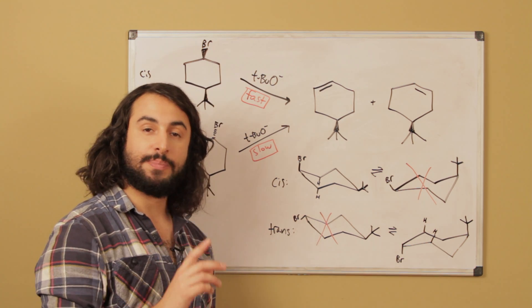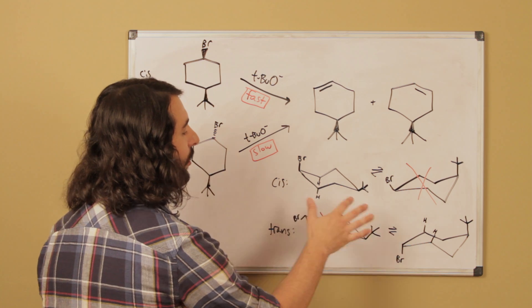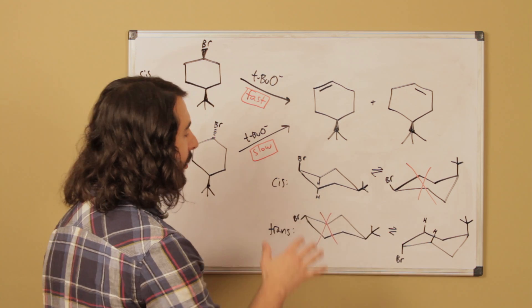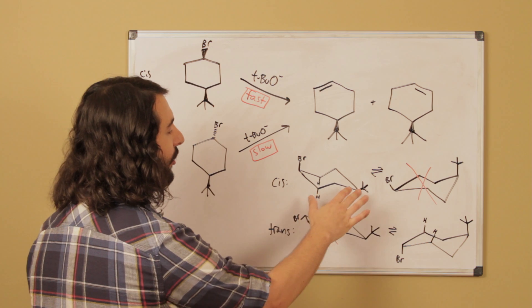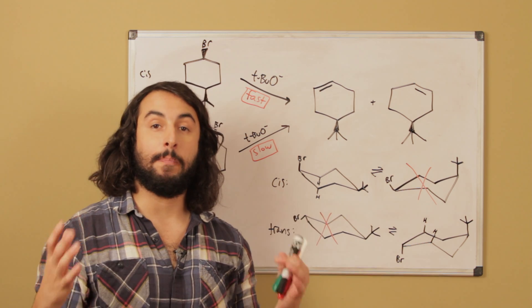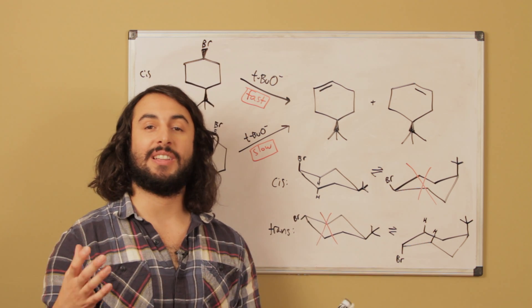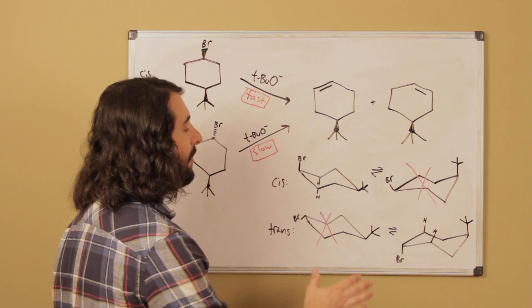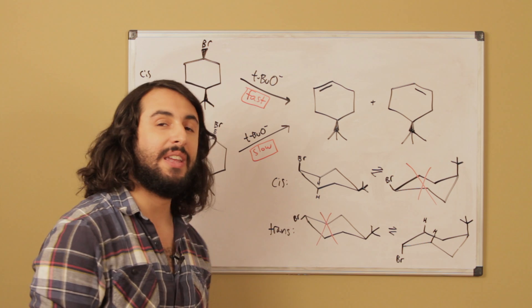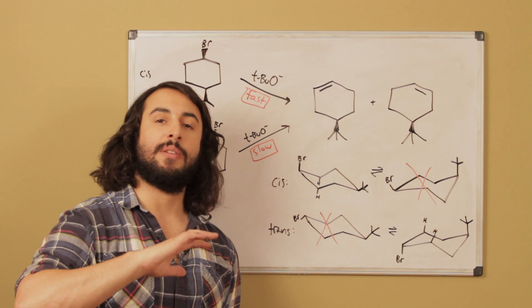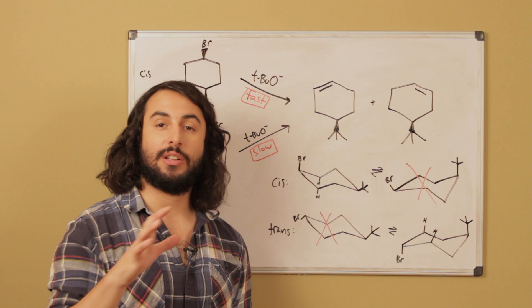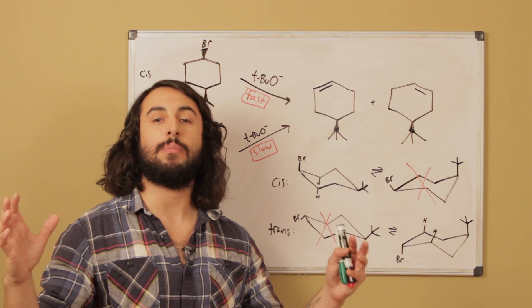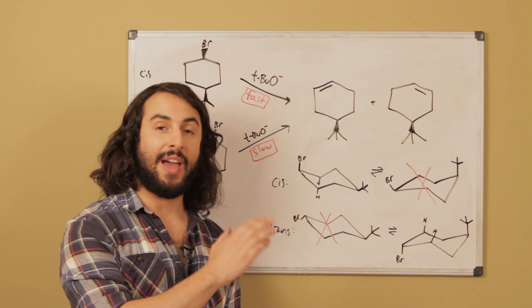So these two chairs - this chair for the cis and this chair for the trans - are the conformations from which E2 can proceed. So that's part one. Number two is to look at the stability here. So if we look at the stability, we understand that the tert-butyl group is a very bulky group. It provides a lot of steric hindrance, and so there's a pretty huge premium on that tert-butyl group being in the equatorial position.